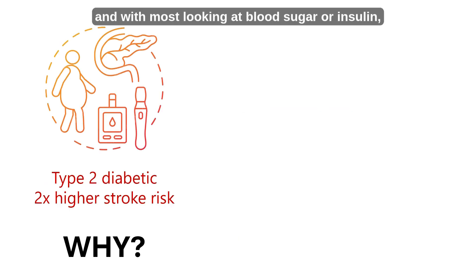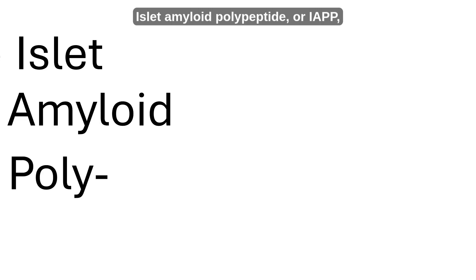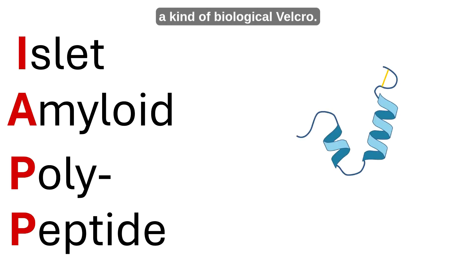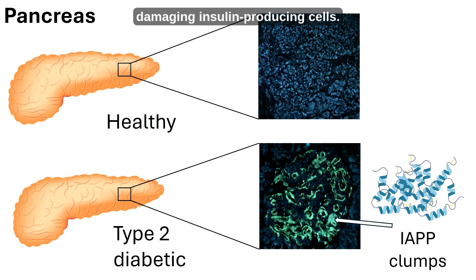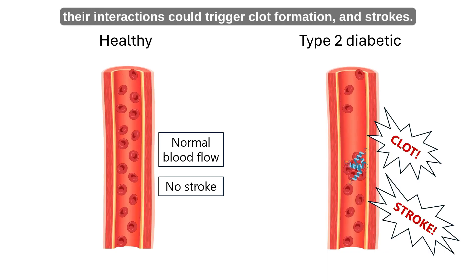The reason why still isn't clear, and with most research looking at blood sugar or insulin, I'm exploring something different: islet amyloid polypeptide, or IAPP, a kind of biological Velcro. In type 2 diabetes, too much IAPP sticks together in the pancreas, damaging insulin-producing cells. If these sticky proteins enter the bloodstream, their interactions could trigger clot formation and strokes.